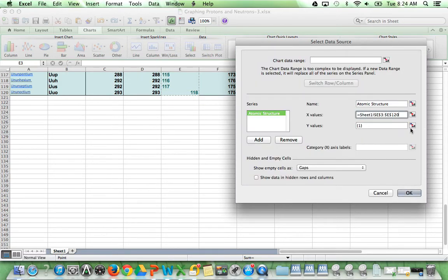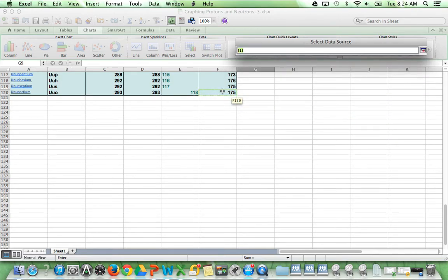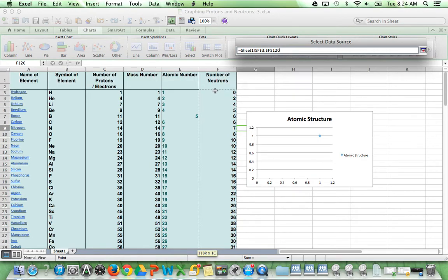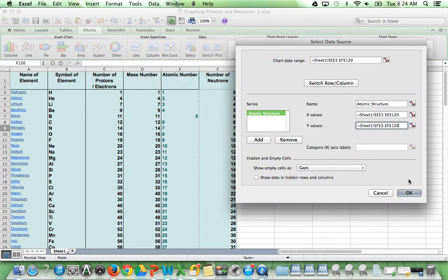And now for our y-values. Actually, it doesn't matter which order, so I'm going to go from 175 back up to the top. Notice I did not select my titles. I'll click OK.